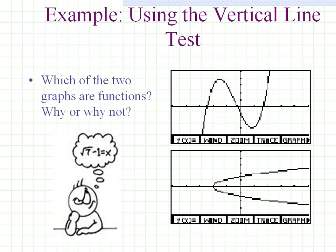Let's see an example of the vertical line test. As you can see in the two graphs shown in the picture: in the first graph, the vertical line cuts the curve at only one point, so it is a function. In the second graph, the vertical line cuts the curve at two points, which means it is not a function.